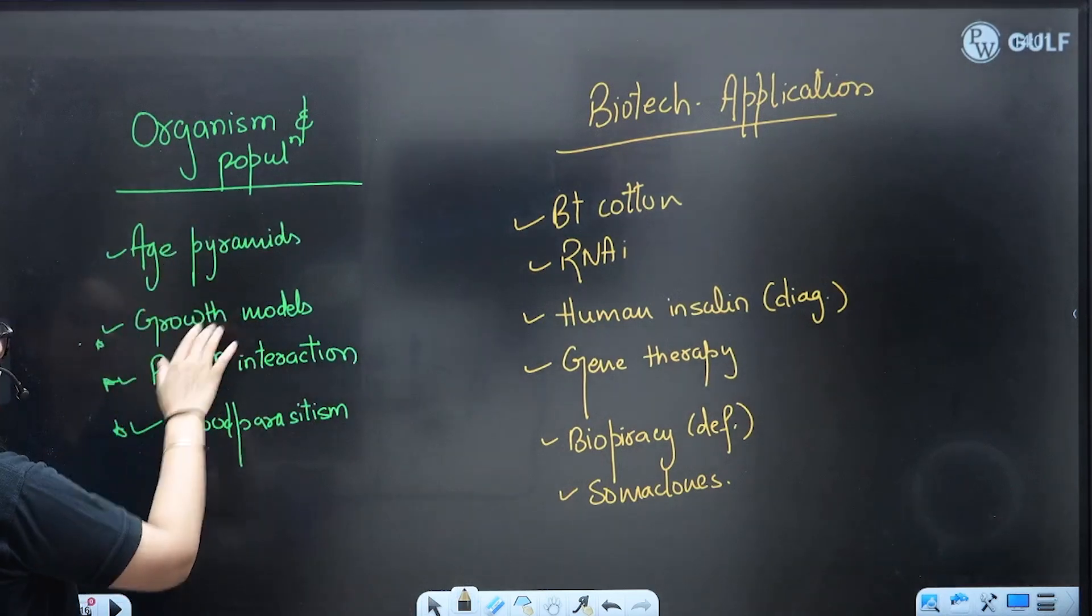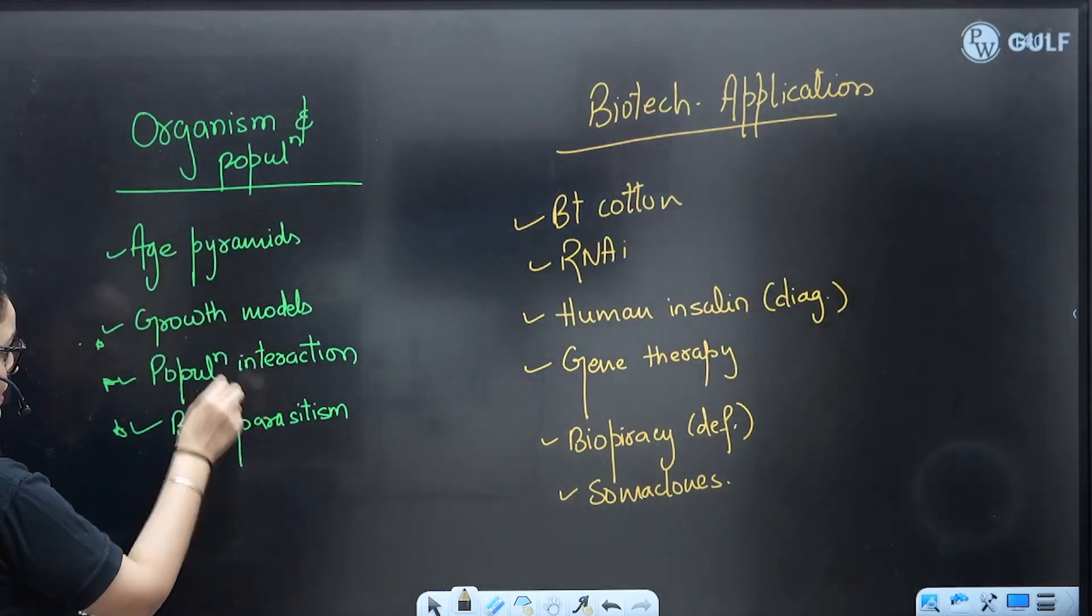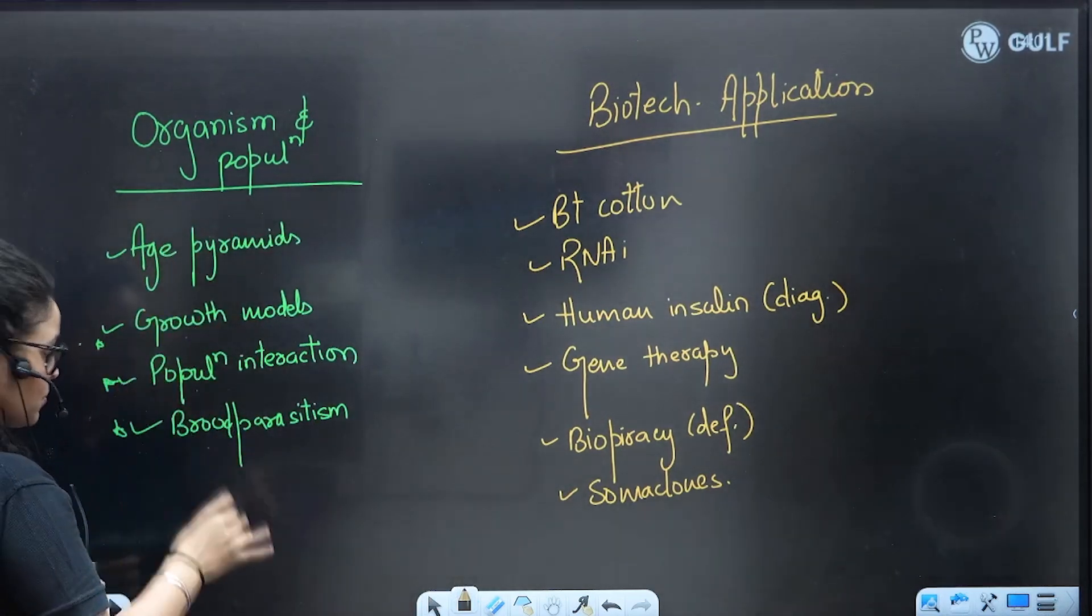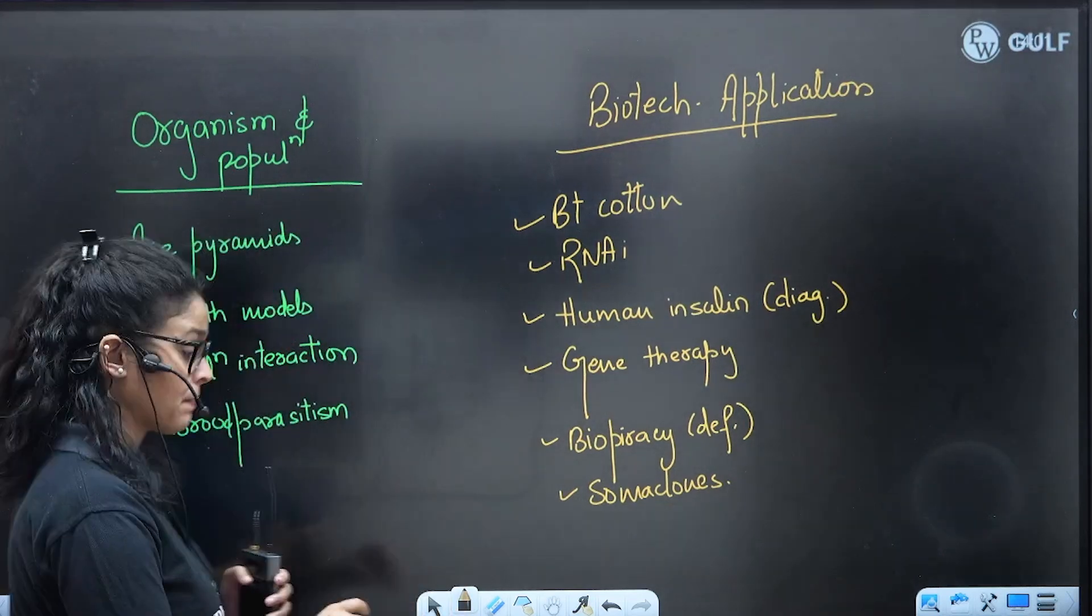Organism and Population: age pyramid and the three topics - growth model, population interaction, brood parasitism, parasitism. These are important topics.